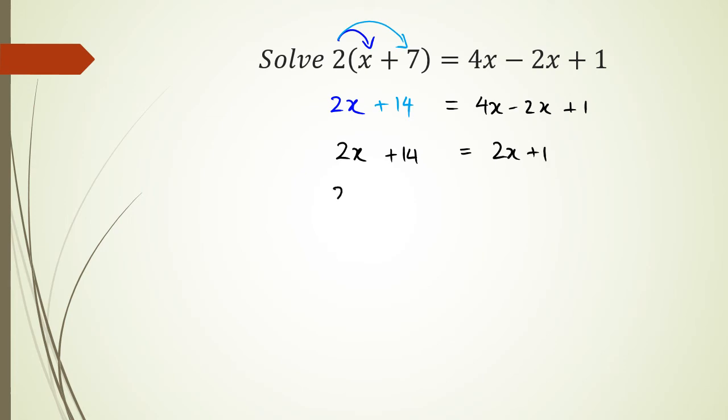Rearranging this, so I've got 2x plus 14. Shifting the 2x to the left-hand side, I get minus 2x. And this is equal to 1. Now what you'll notice is 2x minus 2x is 0, and I've got 0 plus 14 equals 1.